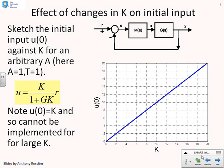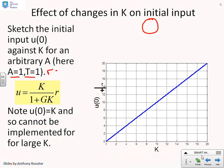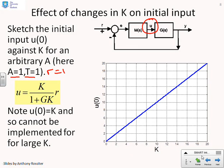What about the effect of changes in proportional gain on the initial input? In terms of my diagram, the input is this signal here that comes out of the compensator and goes into the process, and I might be particularly interested because it tells me about my actuation. Again, I'm assuming A equals 1, T equals 1, and R equals 1. The key point is that u(0) is essentially equal to K.